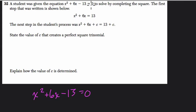Alright, so the student was given this problem to solve by completing the square. The first step that was written is shown below. So here's the first step. I'm going to ask, how did they get x squared plus 6x equals 13? How would they do that? Well, they would add 13 to both sides.